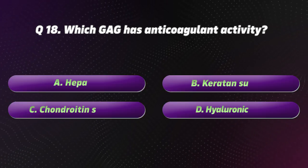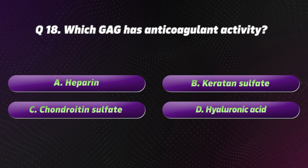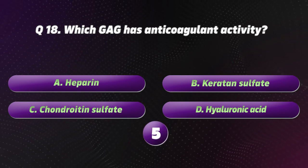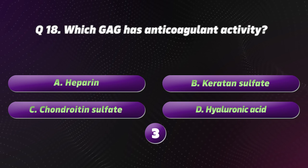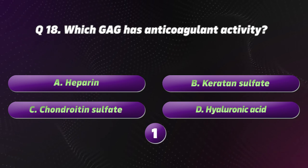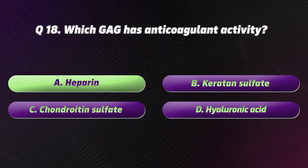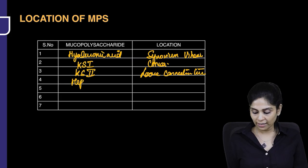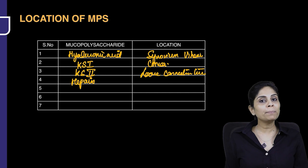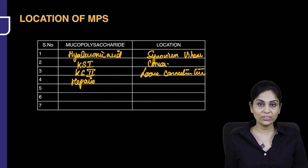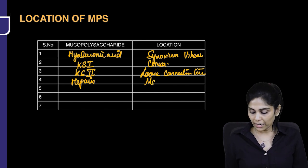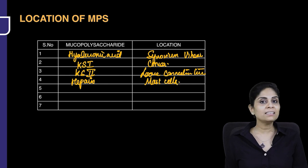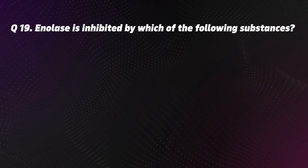Question 18. Which GAG has anticoagulant activity? Options: A. Heparin, B. Keratan sulfate, C. Chondroitin sulfate, D. Hyaluronic acid. The correct option is A, Heparin. Heparin is a natural anticoagulant secreted by mast cells.